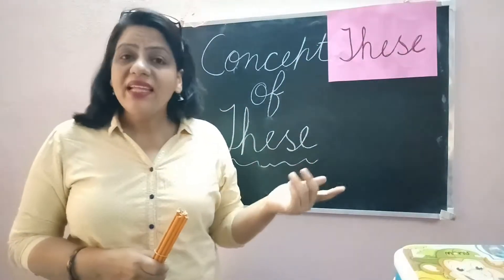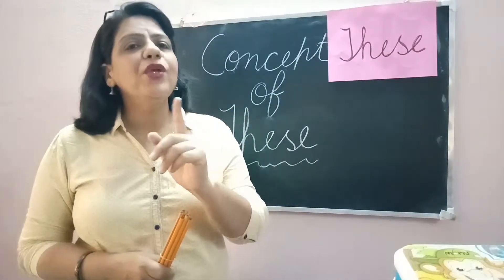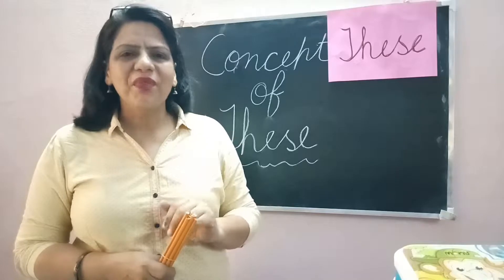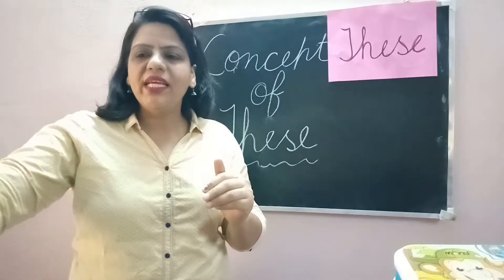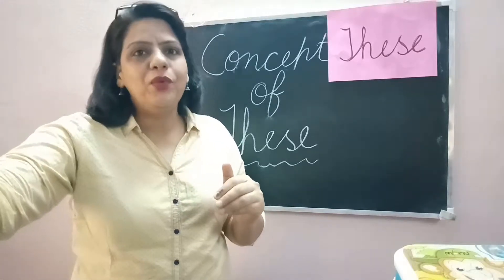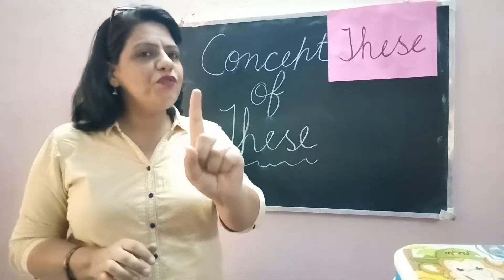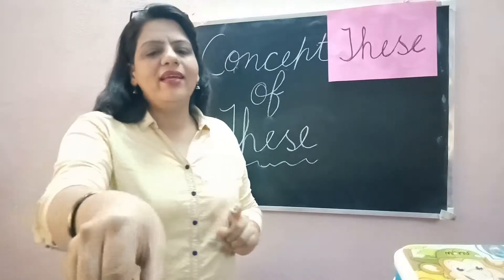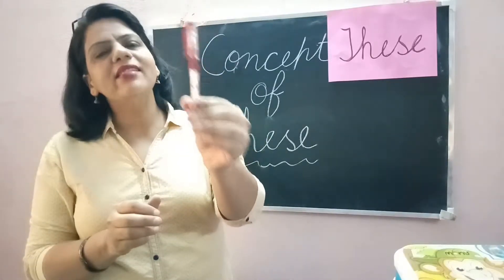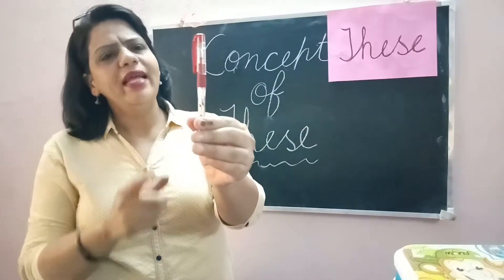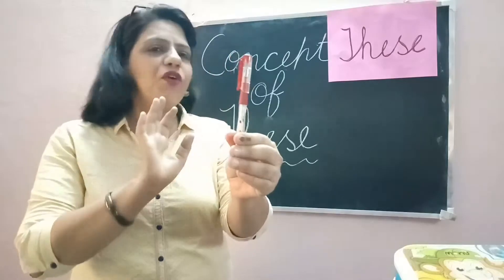That day I taught you how we can use 'this'. This can be used for the objects near to us. But 'this' is used for one thing. Like, this is a pen — it is one, so we use 'this' for it.